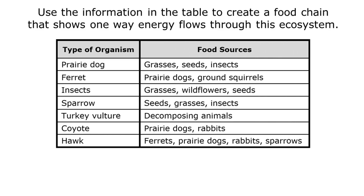We can also use a table of food sources to create a food chain from scratch. Food chains always start with producers, and we'll only find producers in the food sources column. So we need to start by picking a producer from that column — let's start with grasses. Next, we need to find an organism that consumes grasses, so let's pick prairie dogs.